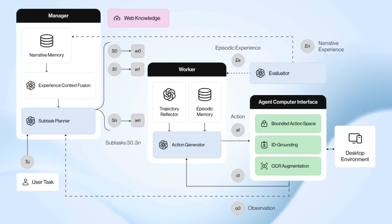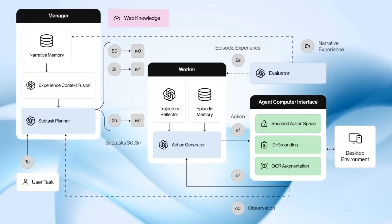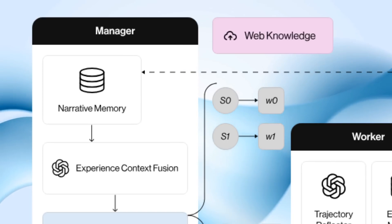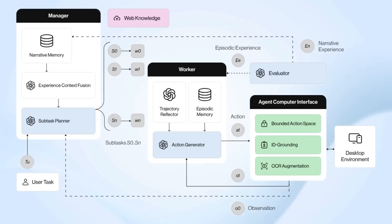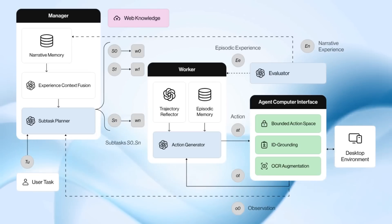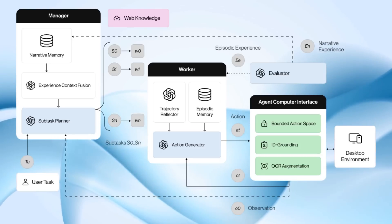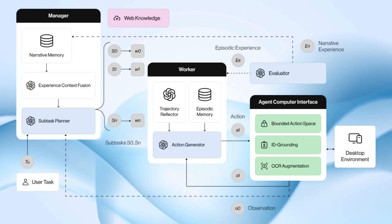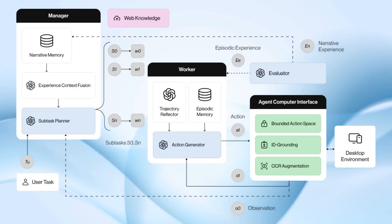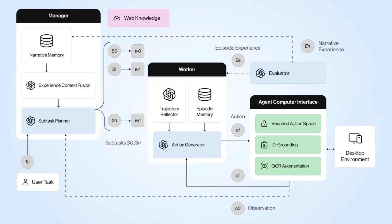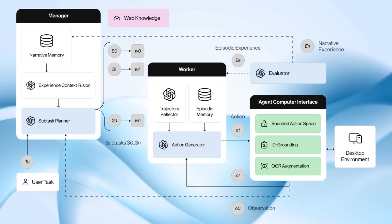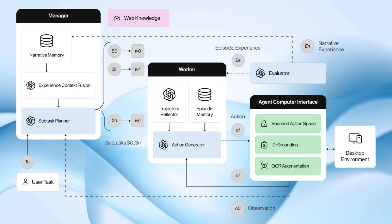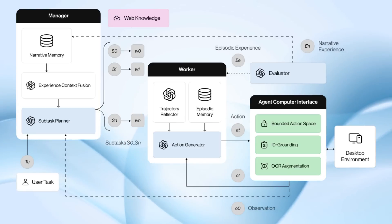If we jump in and have a look, we can see they've got a number of key parts to this. The first part is what they call the manager, which basically takes care of all the planning tasks. They describe this as experience-augmented hierarchical planning — the idea combines web knowledge with internal experiences. Those experiences are stored in memory, which allows it to take a task, decompose it, and then allocate it out to various workers. Then you've got the worker parts, which are able to access some memory and execute the plans they're given. They also use an evaluator to give feedback to the manager.